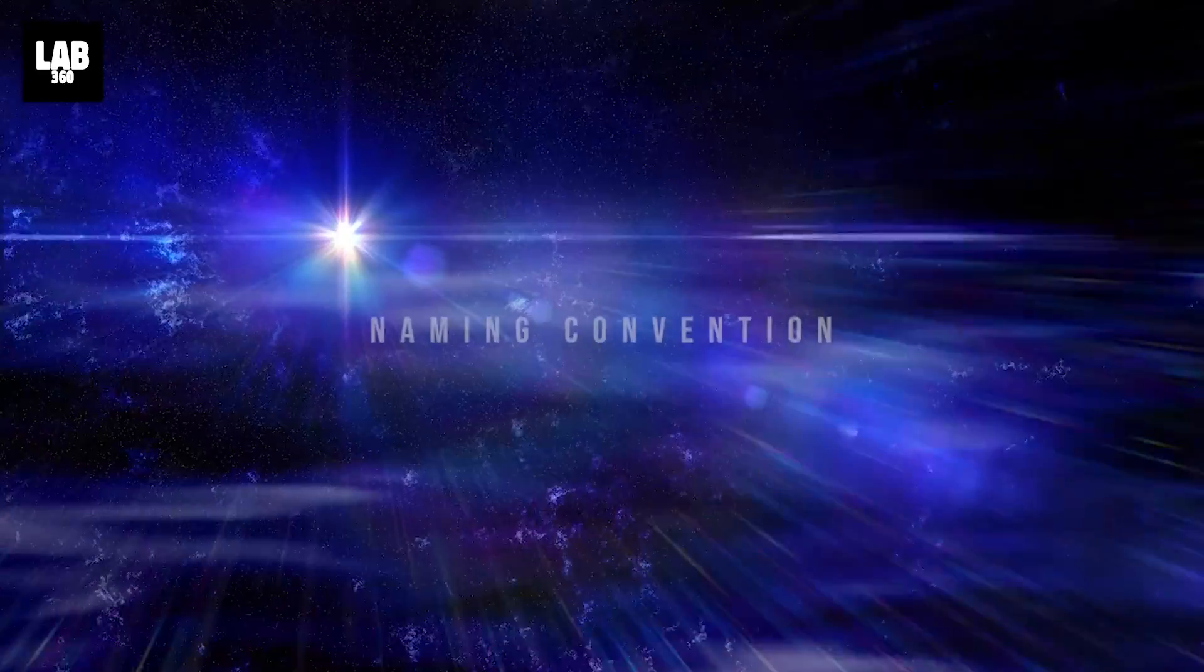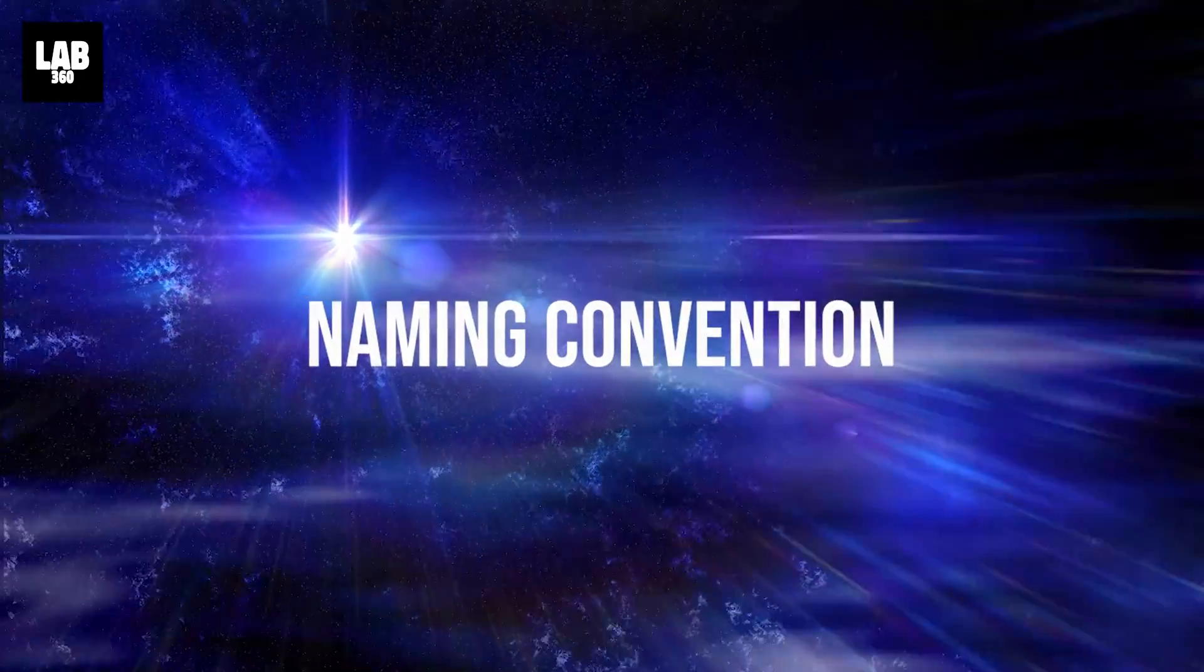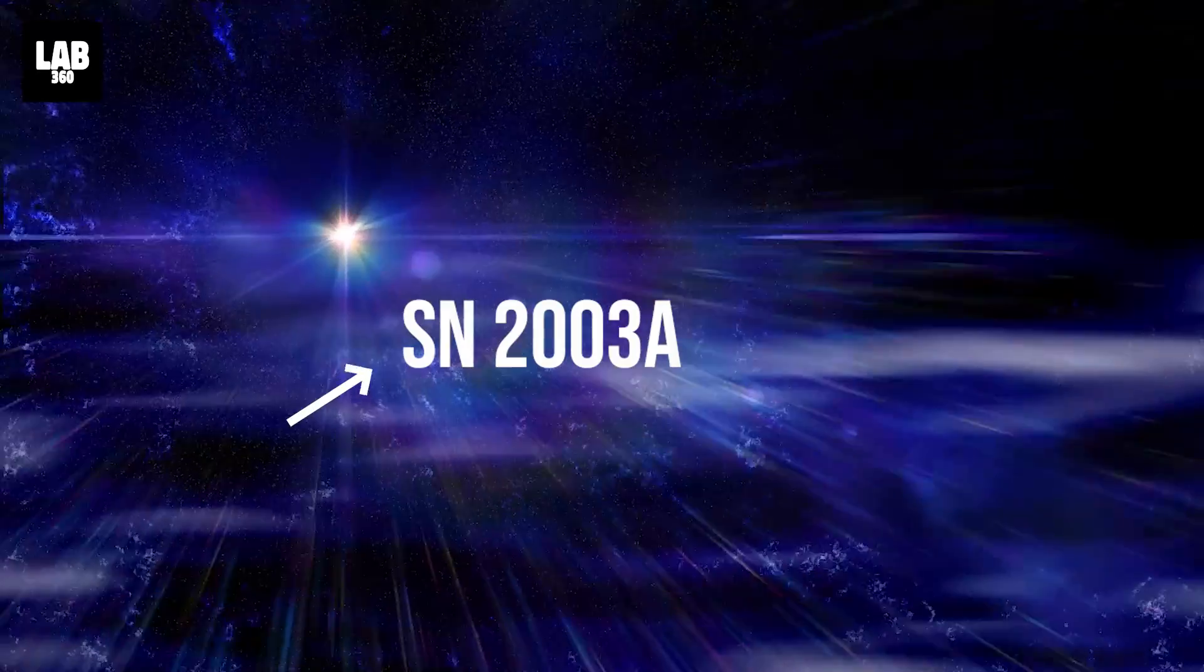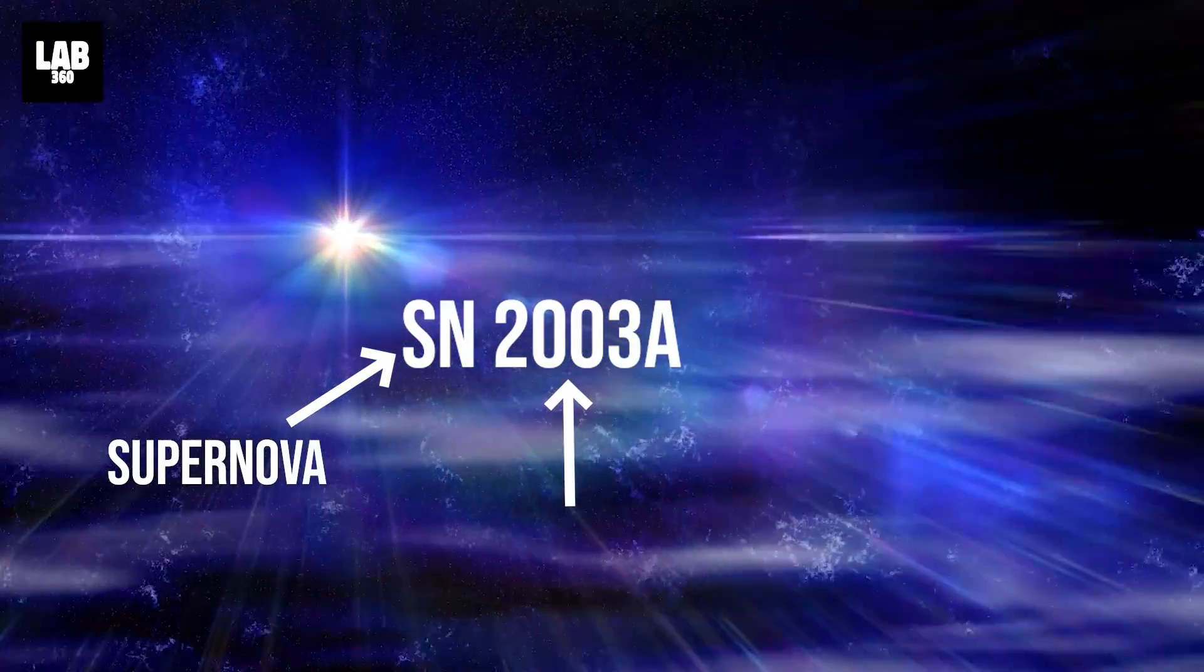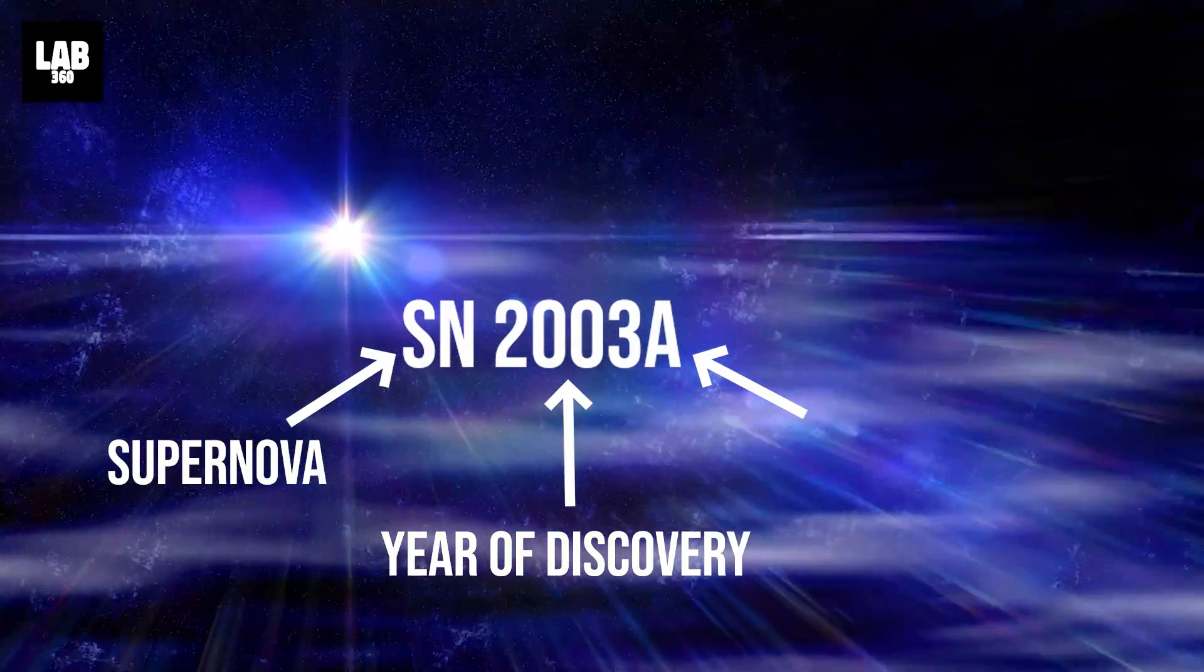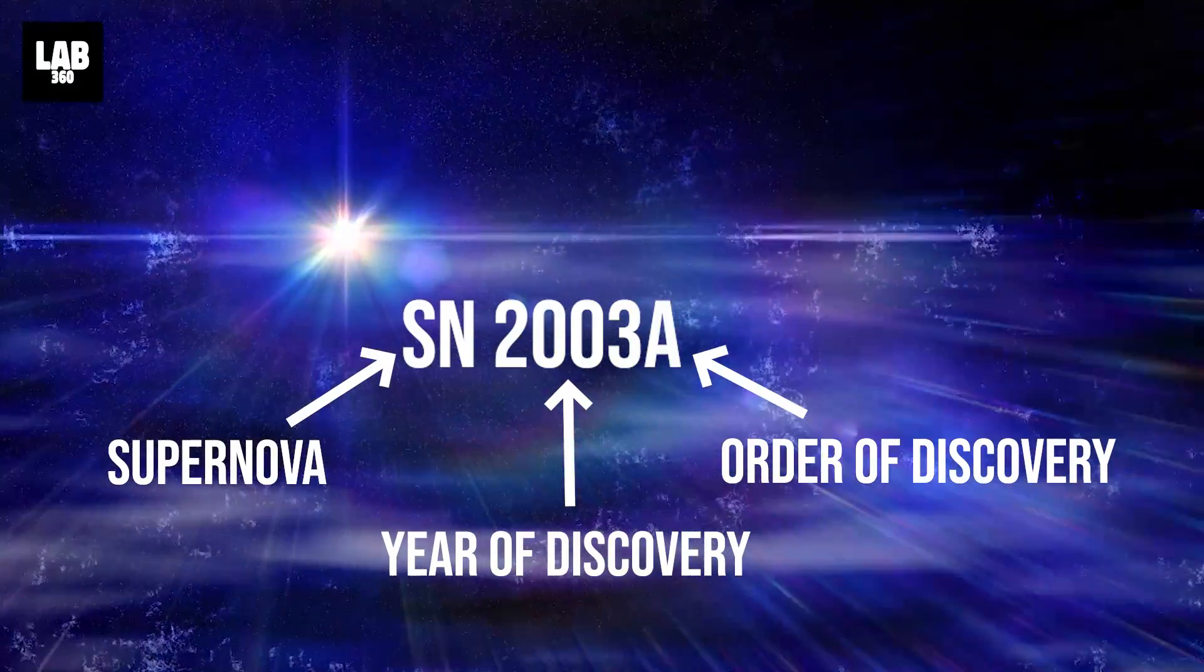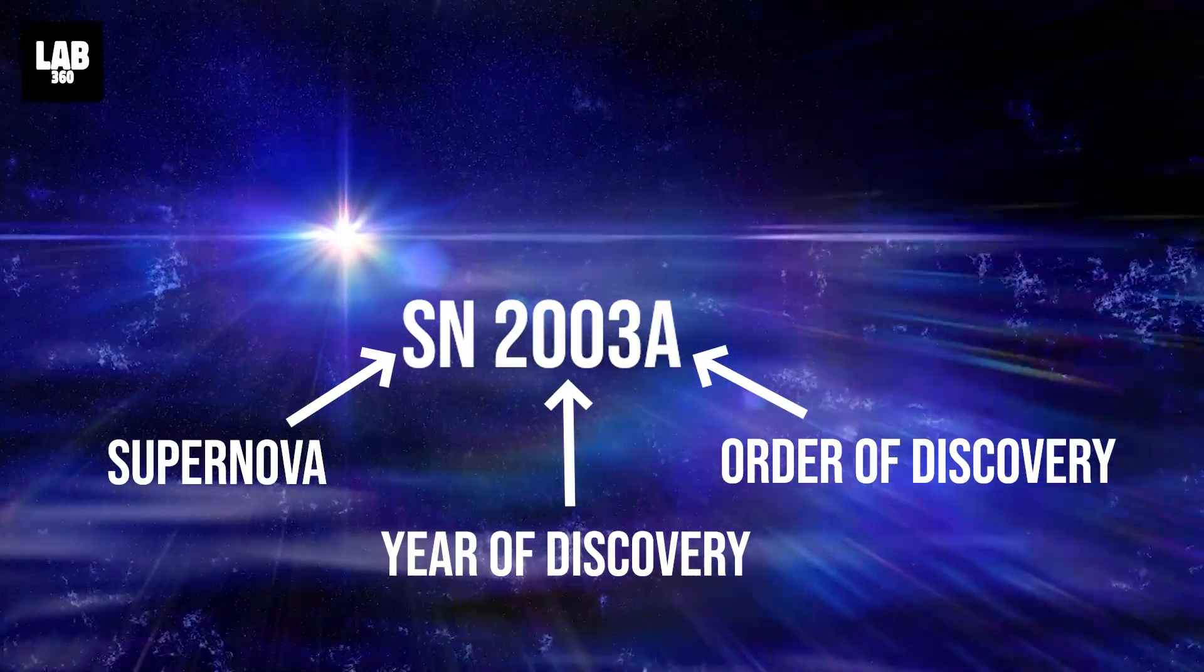The naming convention of a supernova is as follows. The prefix is always SN, standing of course for supernova. The year of the discovery follows next, and then an alphabet from A to Z is suffixed depending on the order of discovery.